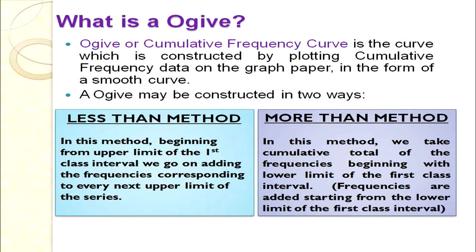Ogives can be constructed in two ways: the less than method and the more than method. In the less than method, beginning from the upper limit of each class interval we go on adding the frequencies corresponding to every next upper limit — so for less than, we use upper limits and cumulatively add all frequencies.